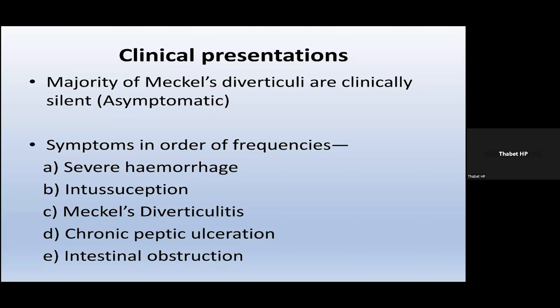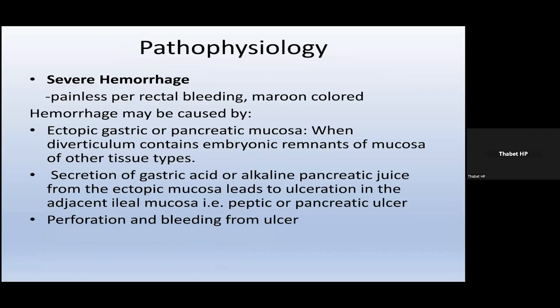Some complications can happen. The patient might have severe hemorrhage, intussusception — because the diverticulum acts as a lead point — or Meckel's diverticulitis. It might mimic chronic peptic ulceration because of the gastric tissue content inside the diverticulum, or it might cause intestinal obstruction if inflamed and obstructing the bowel. Patients can present with severe, painless rectal bleeding — a maroon-coloured hemorrhage — mainly caused by ectopic gastric or pancreatic mucosa. When the diverticulum contains ectopic remnants of mucosa, it might bleed with inflammation, or secretion of gastric acid or alkaline pancreatic juice from the ectopic tissues inside the diverticulum might ulcerate, inflame, and bleed.